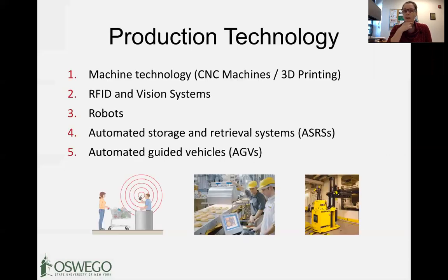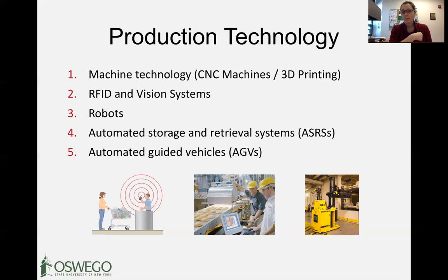Some available production technologies include CNC machines, 3D printing depending on your industry, and RFID solutions and vision systems, which are increasingly utilized in grocery stores, retail, and hospitals. For example, I work with hospitals where all team member tags have an RFID chip, and vision systems are embedded in the ceiling. When a caregiver walks up to the sink to wash their hands, the system determines how long they wash — after 15 seconds, they get a green light confirming successful handwashing.